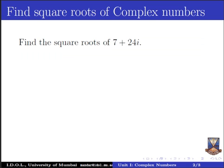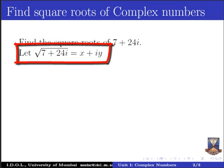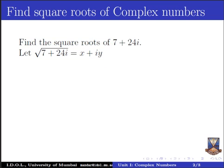We have a complex number 7 plus 24i. The question is to find the square roots of this complex number. As a first step, we assume that the square root of 7 plus 24i is equal to a complex number x plus iy, where x is the real part and y is the imaginary part. On squaring both sides, the left hand side is equal to 7 plus 24i and the right hand side becomes x plus iy whole square.